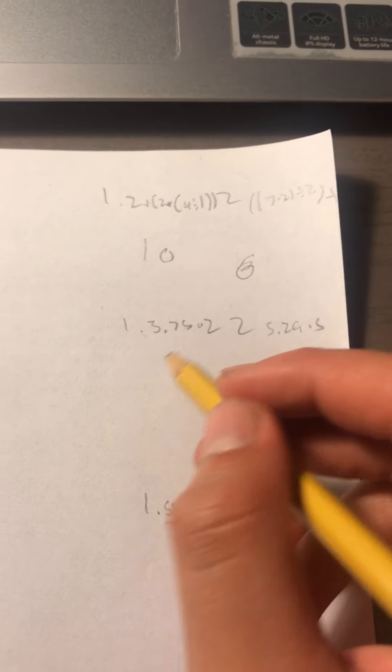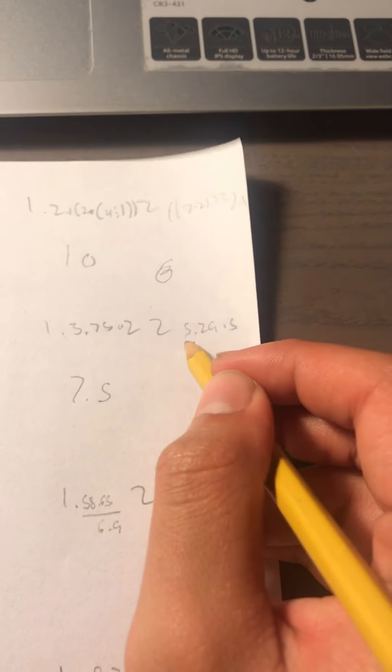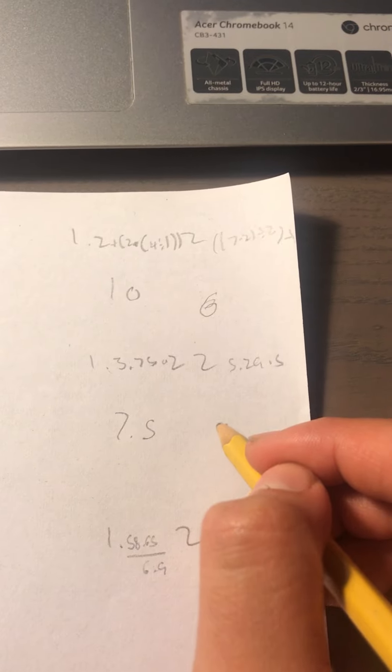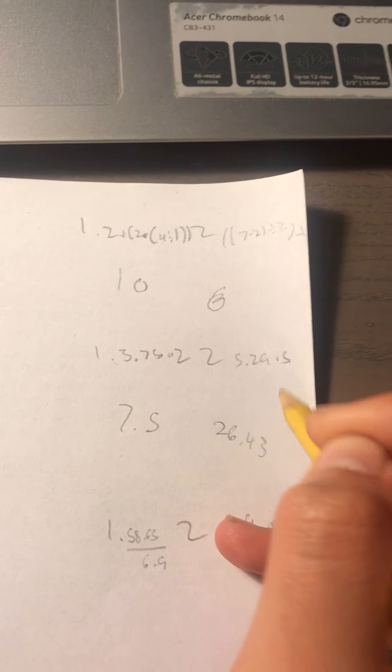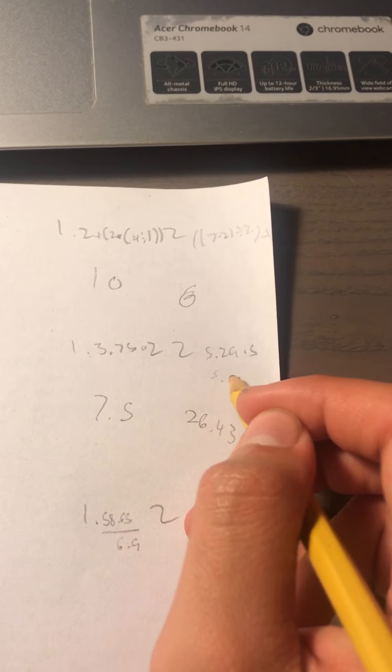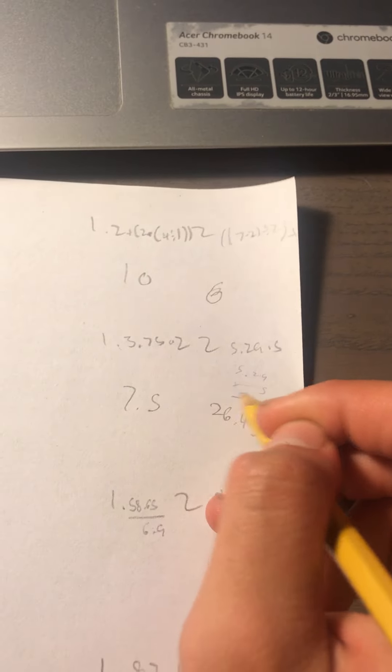So the next one we'll be multiplying this one. That times that is 7.5, this one times that is 25, no I'm sorry, 26.43 because you have to multiply everything and you do big division like 5.29 times 5, right? You'll get that.